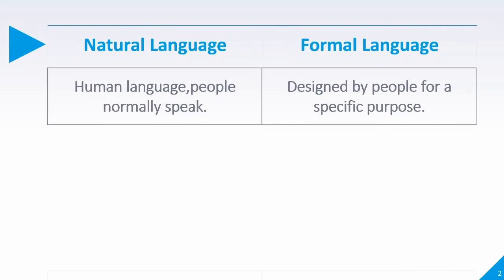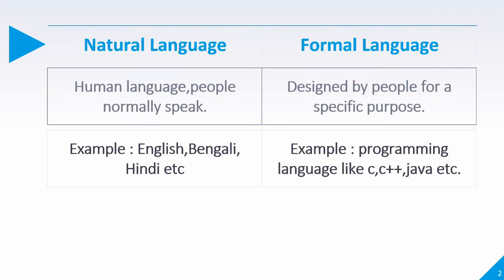For example, natural language includes English, Bengali, Hindi, and other languages like Arabic, French, etc. Formal language is all kinds of programming languages like C, C++, and Java.